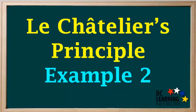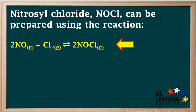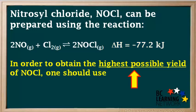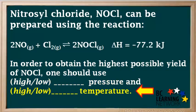In this example, we'll show you how to use Le Chatelier's principle to determine the best pressure and temperature conditions to achieve a high yield of product. Nitrosyl chloride, NOCl, can be prepared using the reaction 2NO plus Cl2 gives 2NOCl, and the enthalpy change, delta H, is negative 77.2 kJ. We want to obtain the highest possible yield of NOCl. Yield simply means how much NOCl we will obtain once equilibrium is reached. We're asked whether we should use high or low pressure and high or low temperature.